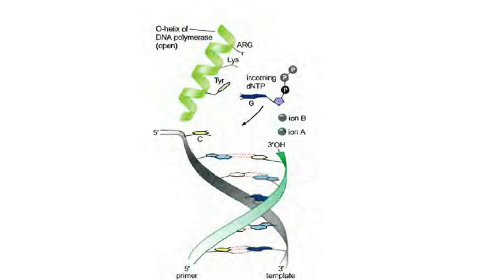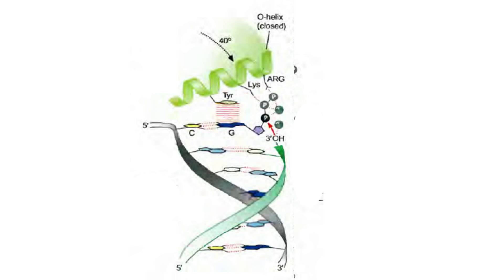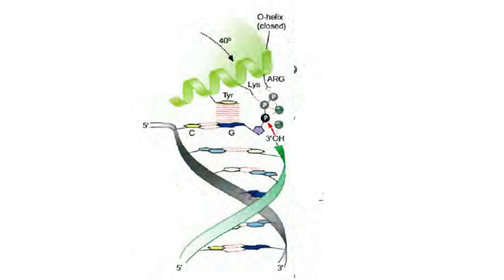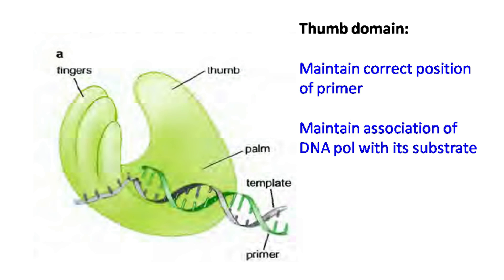Now let's talk about the finger domain. The finger domain has an alpha-helical protein with arginine, lysine, and tyrosine residues at the active site. These residues bind incoming nucleotides. If the correct nucleotide is added and base pairing forms, there is a conformational change in the alpha helix that brings the nucleotide close to the catalytic site in the palm domain. The thumb domain has two roles: it maintains the correct position of the RNA primer and maintains strong association of DNA polymerase with its substrate.